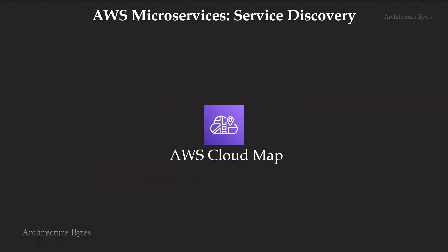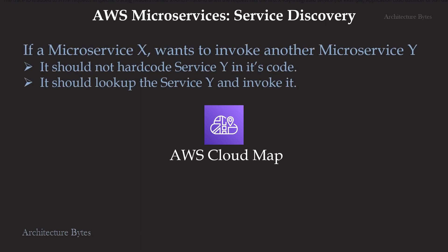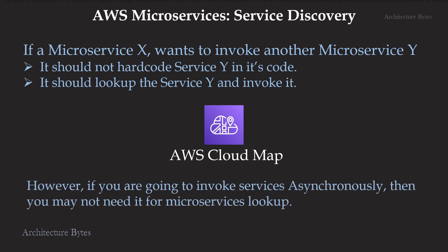Let's look at service discovery in the microservices world. If a microservice X wants to invoke another microservice Y, it should not hard-code service Y in its code. Instead, it should look up service Y and invoke it. AWS CloudMap can help with this — it can keep track of available services and their locations. However, if you are going to invoke services asynchronously, then you may not need it for microservice lookup.